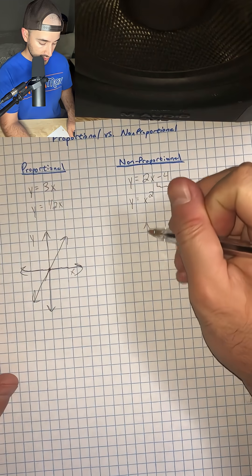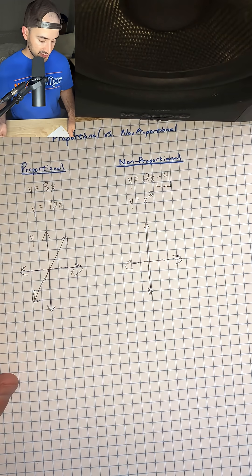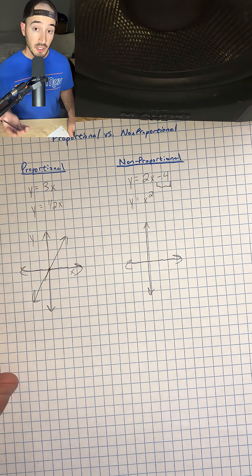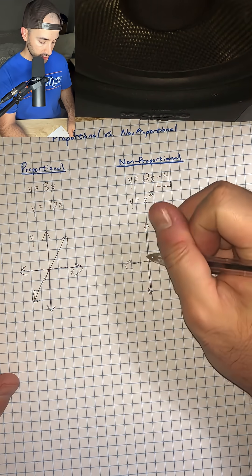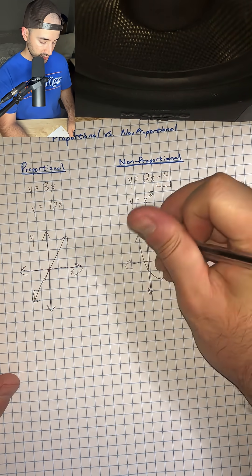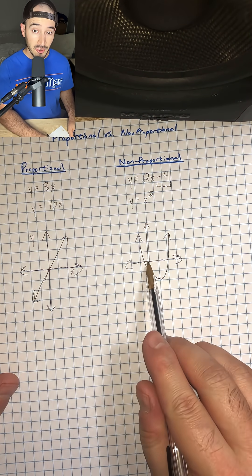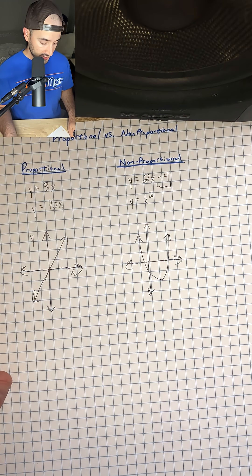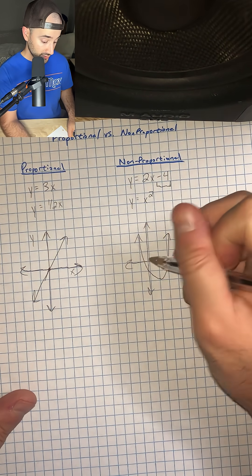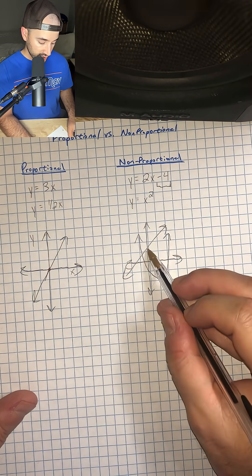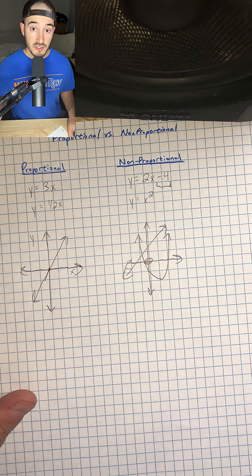Same thing, I'm going to draw my y-axis and my x-axis, and an example of a non-proportional graph would be we could draw a parabola or a curved line like that. It's not a straight line and it's also not going through the origin. And then another example, if we have a straight line that's not going through that origin, then it's non-proportional.